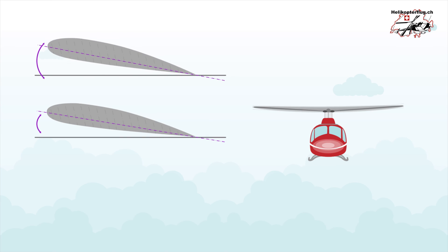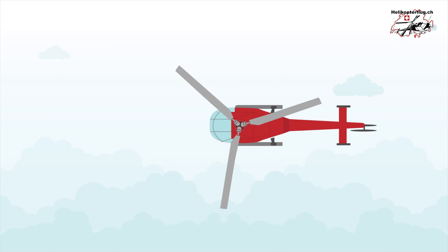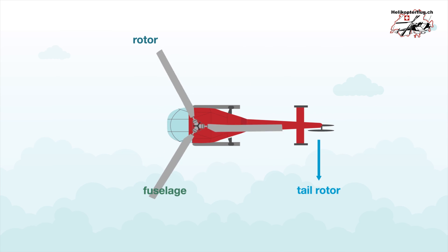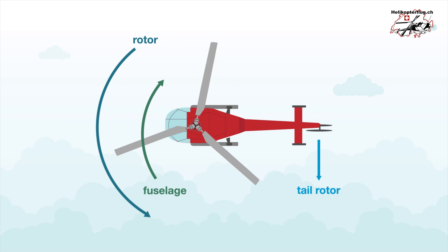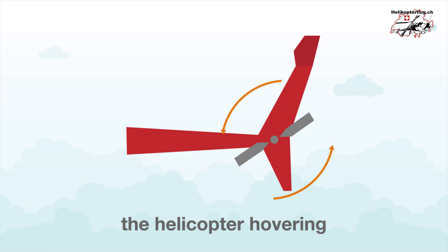Increasing the angle of attack increases lift and the helicopter begins to climb, while decreasing the angle of attack causes the helicopter to descend. To prevent the fuselage of the helicopter from moving against the rotational direction of the rotor, most models feature a vertically rotating tail rotor that compensates for this torque.